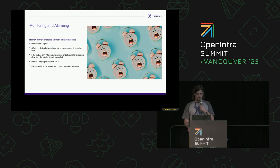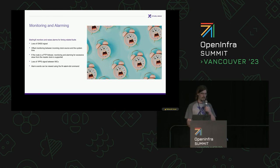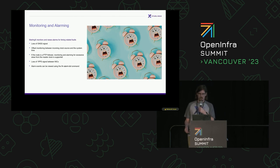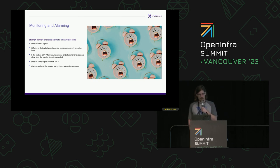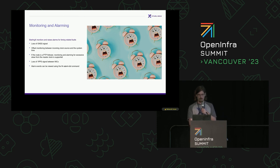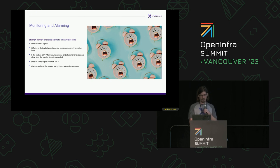Once your StarlingX node is set up and PTP is configured, on the operational side you care about monitoring and alarming to make sure that if you lose your GNSS signal or some other issue occurs, you have a way to become aware of it and address it. StarlingX provides support for monitoring and raising alarms for several types of faults: it tracks the loss of GNSS signal, monitors the offset between an incoming clock source and the system time, and if there's too high a skew it will throw an alarm. It also tracks the one pulse per second signal between various NICs. All of this is viewable through the FM alarm list command.